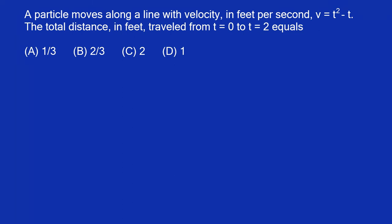Welcome back. Today we're going to be looking at a physics problem that involves some basic calculus. So we have a particle that moves along a line with velocity in feet per second v equals t squared minus t. The total distance in feet traveled from t equals zero to t equals two equals one of the following.